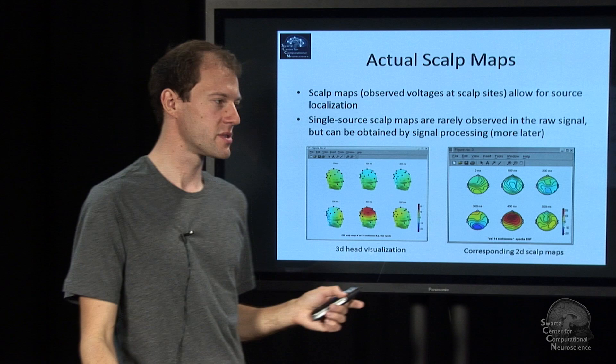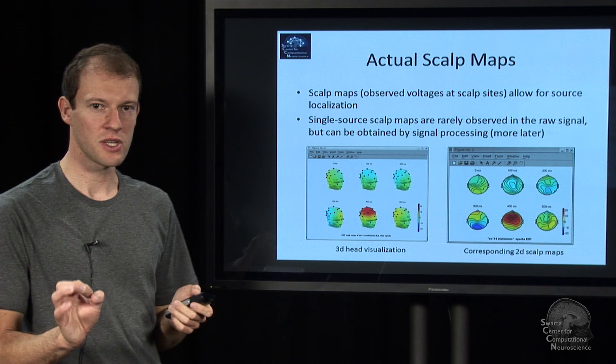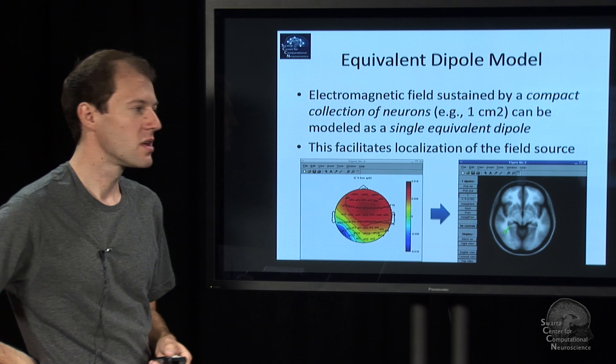Nose is usually on the top in our plots. This is, by the way, EEGLAB plots. And then there is a few which are harder to interpret. But that's what we get for a single, say, independent source. I'll talk about independence later.